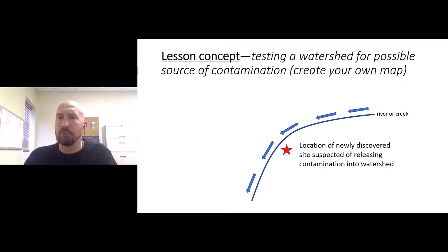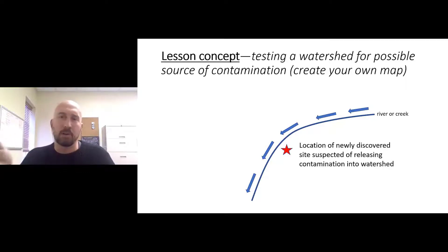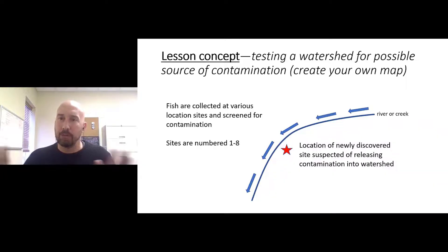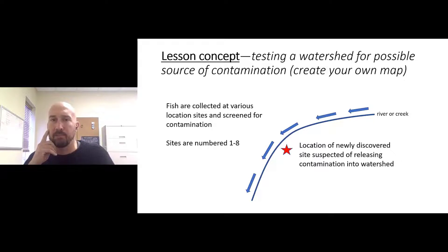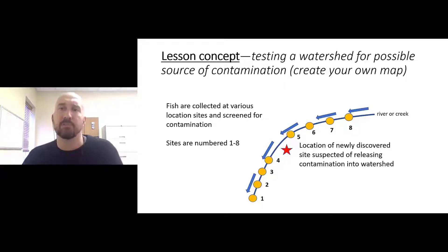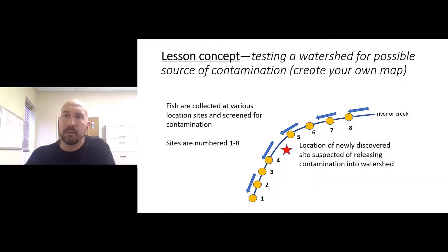Within this creek, the current flows from north to south — that's going to be important for formulating a hypothesis. If we have this creek with the current flowing from north to south, and a location potentially releasing contamination is right in that bend indicated by the star, we can conduct an experiment by collecting fish throughout that creek — both upstream and downstream — and screen those fish samples for the presence of contamination. On this map, the collection sites are numbered. We have eight collection sites: sites one, two, three, and four are downstream of the suspected source; sites five, six, seven, and eight are upstream.